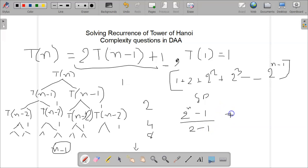So the complexity is 2^n - 1. If we solve this using the other method, which is the substitution method, we will also get the same answer. In the next video I will solve the same recurrence using the substitution method. I hope this video is useful to you. Thank you very much for watching.